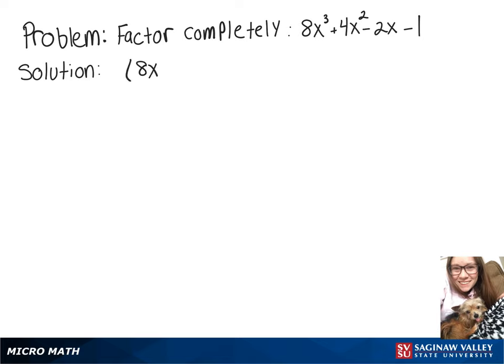So to do that, we're going to split up those first two terms. We've got 8x³ + 4x² in parentheses, plus the second two terms, -2x - 1.